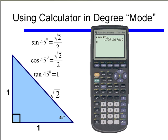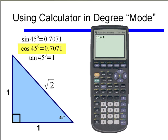This has to do with exact versus approximate answers. Let's type in square root of 2 divided by 2 and see what we get — great, we get the same answer. So the approximate value for the sine of 45 degrees is 0.7071. The cosine of 45 degrees should equal the sine of 45 degrees, and it does. And the tangent of 45 degrees — remember, tangent is opposite over adjacent — should give us an answer of 1.